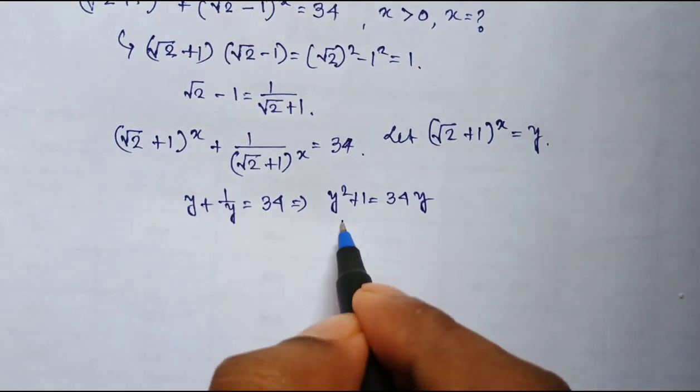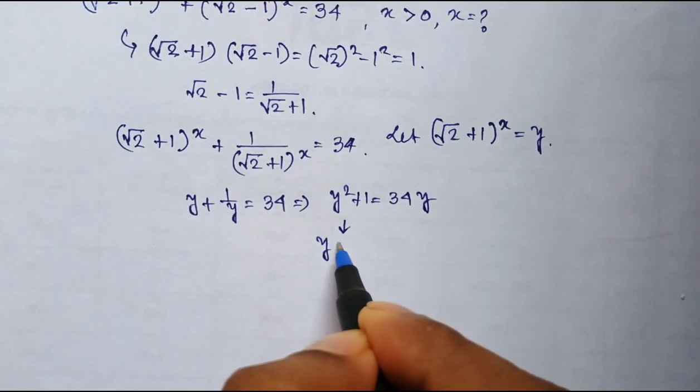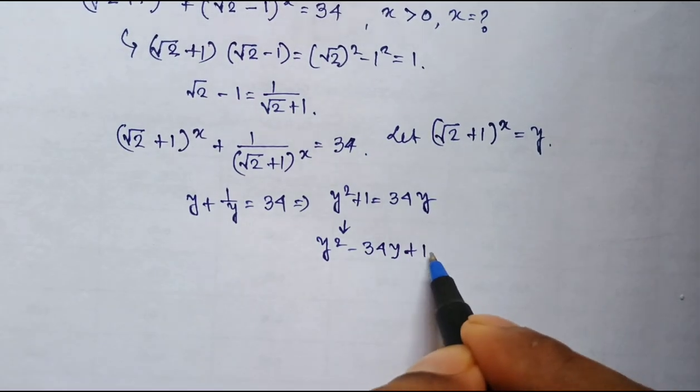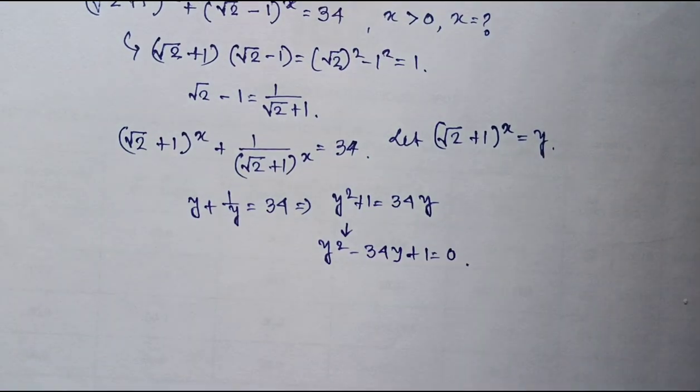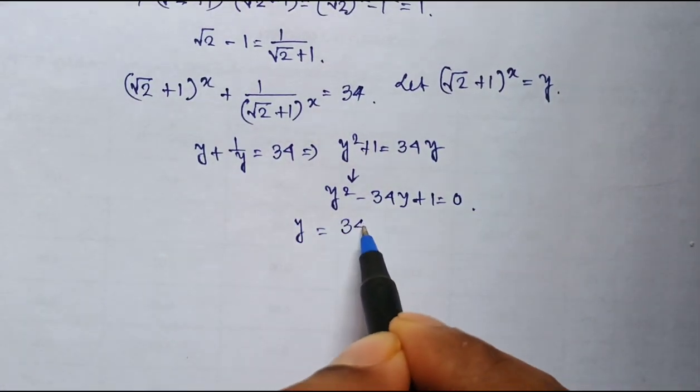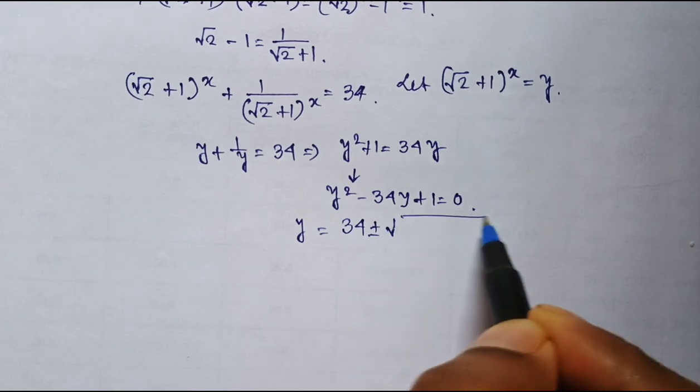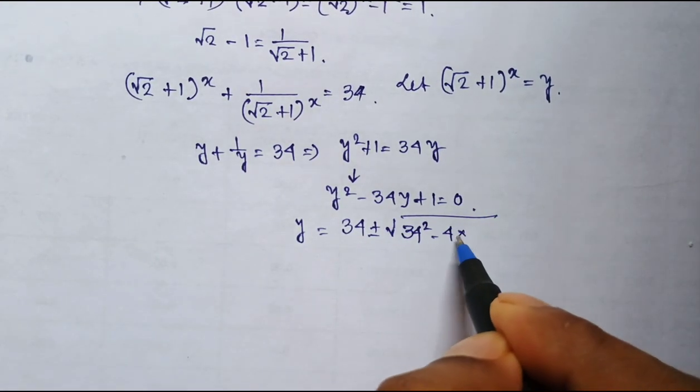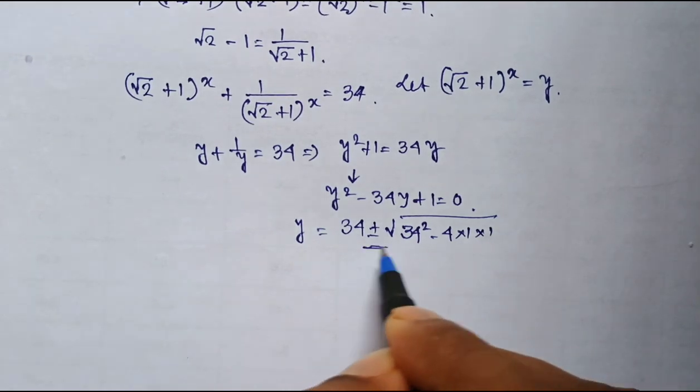So, applying the formula of quadratic equation, y square minus 34y plus 1 equal to 0. That means y equal to 34 plus minus square root of 34 square minus 4 into 1 into 1 whole divided by 2.